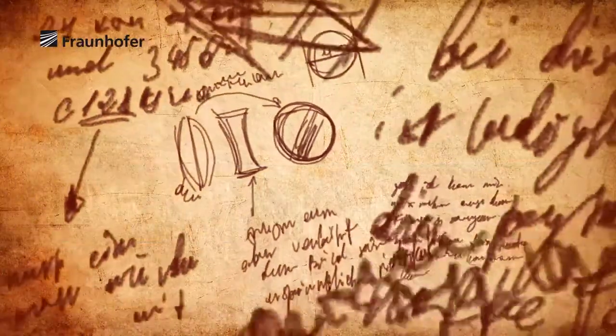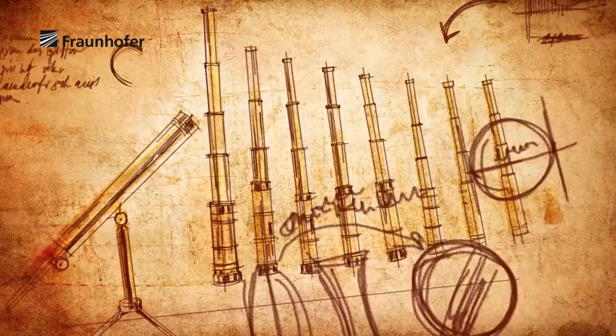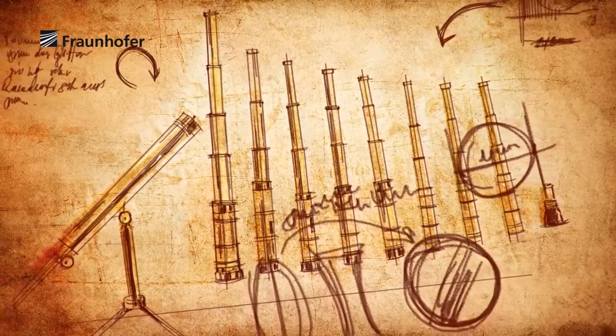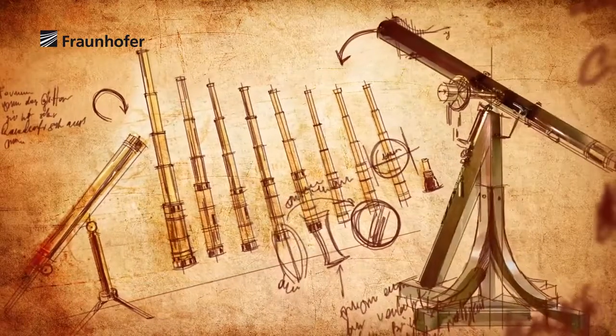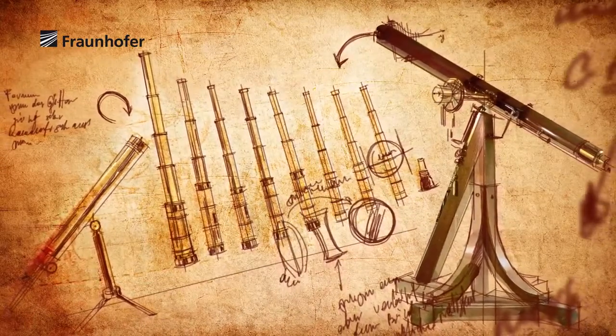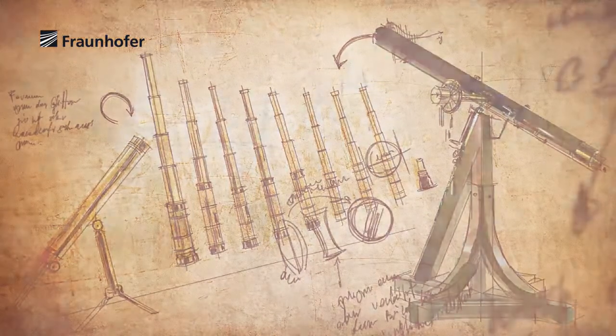Now he was able to produce high-quality, streak-free raw glass of a consistent quality, from which he made the best lenses. With them, he was able to build the most efficient and largest astronomical telescopes of his time.